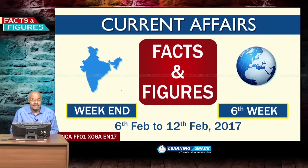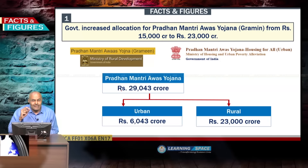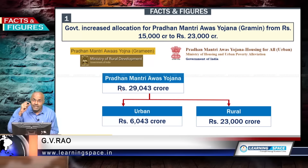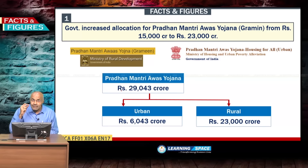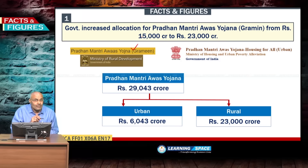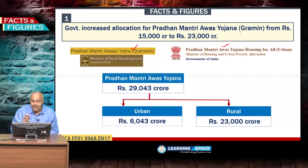Welcome back to Facts and Figures. The government increased allocation for Pradhan Mantri Avas Yojana Grameen in the recent Union Budget from ₹15,000 crore to ₹23,000 crore. Housing for All is the flagship program of the Union Government to ensure a house for every individual by 2022. PMAY-Grameen is under the Ministry of Rural Development, and PMAY-Urban is under the Ministry of Housing and Urban Poverty Alleviation.